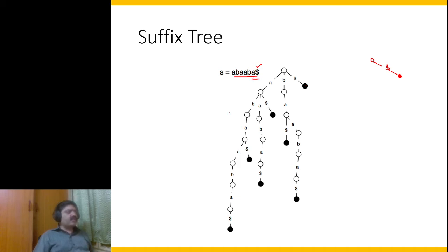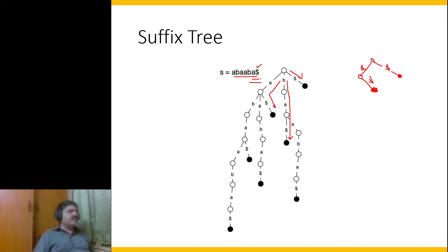The next suffix is 'a$'. Since 'a' does not exist yet, I add another node with edge labeled 'a', followed by dollar, and a dark circle to mark the end. So we have seen two suffixes: dollar and a$. Now let us take the next suffix 'ba$' — so I have 'b', 'a', dollar along that path. Similarly the next suffix is 'aba$', so I have a, b, a, dollar along another path.